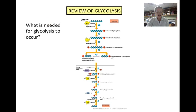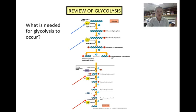In order for glycolysis to occur, a few reactants are necessary. ATP is needed for the preparatory stage, and ADP is needed for the energy conserving stage. As long as there is a little bit of ATP in store, it gets used and recycled, so this isn't a problem.